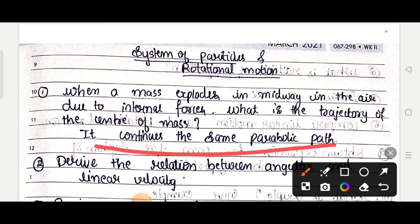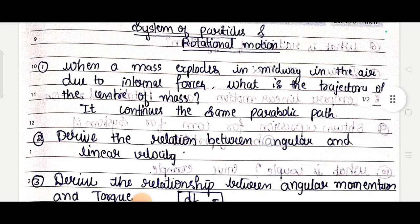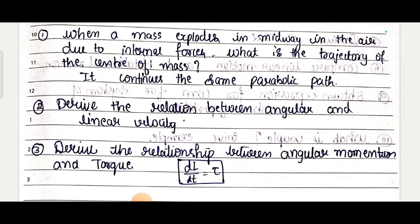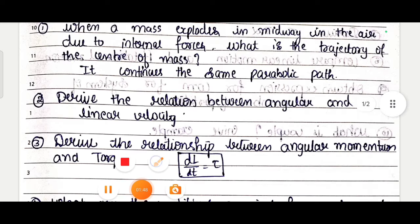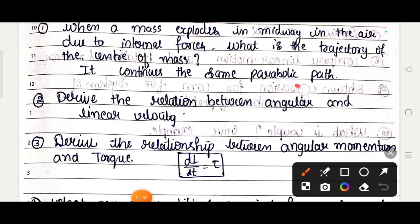Second question: derive the relation between angular velocity and linear velocity. That is, v equals r omega - this equation needs to be derived. This is for 3 marks.